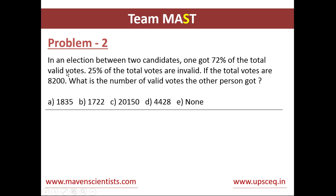First, we'll calculate how many valid votes there were. The total votes are 8200, and the valid votes will be 75% of the votes, which is 3/4 × 8200. Next, we'll multiply 28/100 by this amount to get the total valid votes obtained by the other candidate.